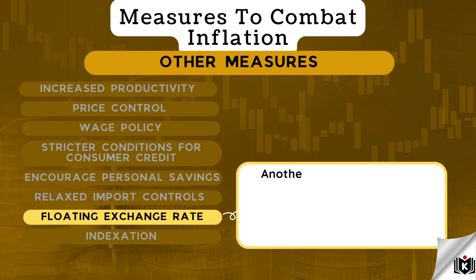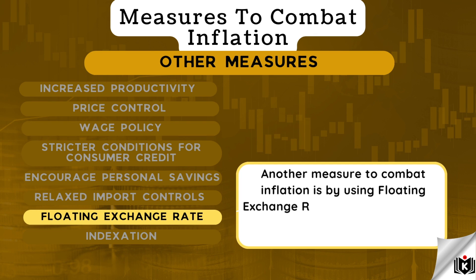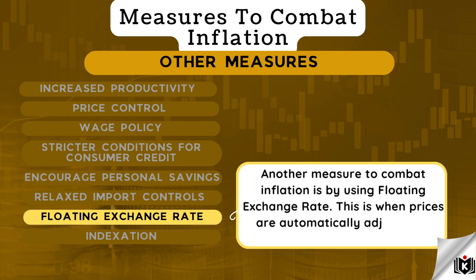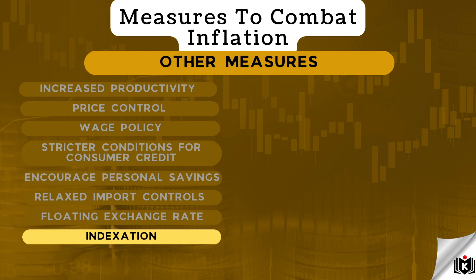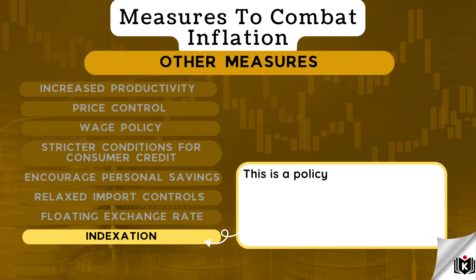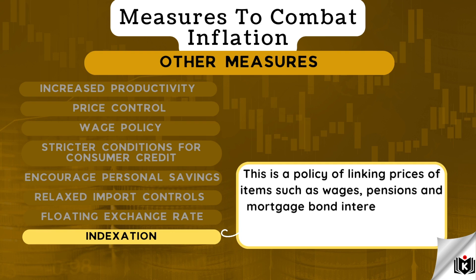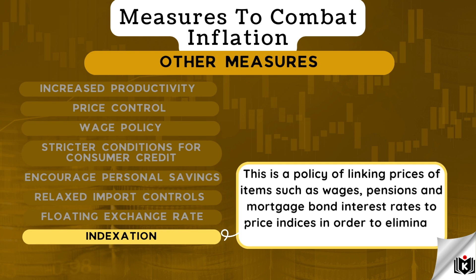Another measure to combat inflation is by using a floating exchange rate. This is when prices are automatically adjusted to international conditions. Indexation is a policy of linking prices of items such as wages, pensions, and mortgage bond interest rates to price indices, in order to eliminate the effects of inflation.